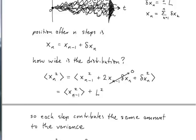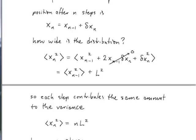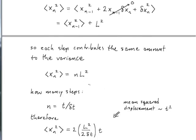It tells you that the squared displacement after n steps is growing by L squared with every single step. So each step contributing the same amount to the variance tells you that the mean squared displacement is proportional to the number of steps times L squared because of the way this formula grows.